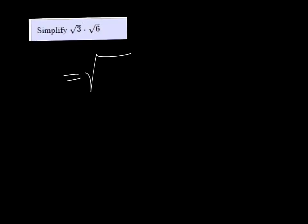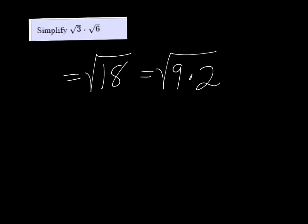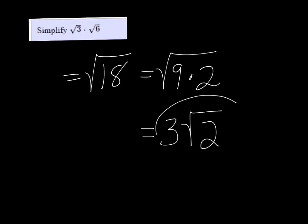We're going to simplify the square root of 3 times the square root of 6. This is equal to the square root of 18, which is the square root of 9 times 2. The reason we want to break it down that way is because the square root of 9 is just 3, and that can come out, and we're left with 3 root 2.